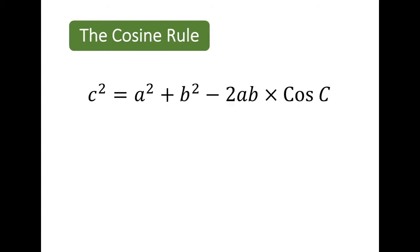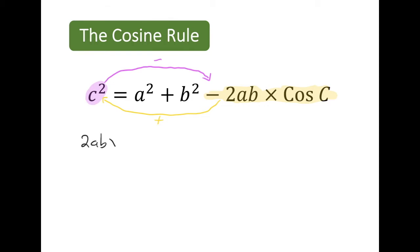To rearrange the formula, we subtract 2a times b times cos of angle c and move it over to the other side, where it becomes a plus. Then we take our c squared value and move that over to the other side as well, where it becomes a subtraction. What we are left with is: 2ab times cos of c equals a squared plus b squared minus c squared.